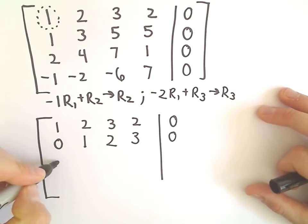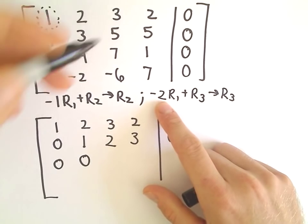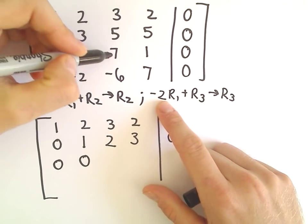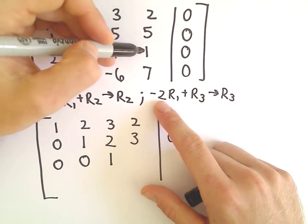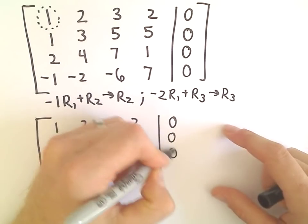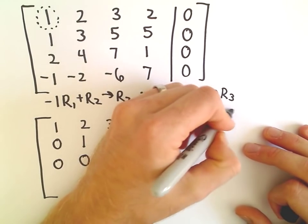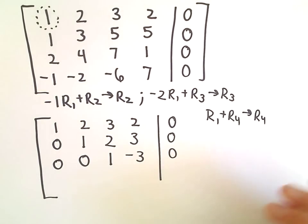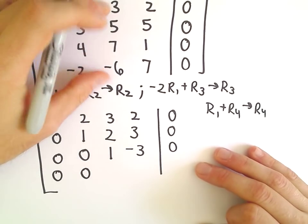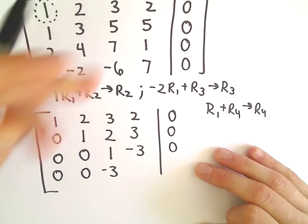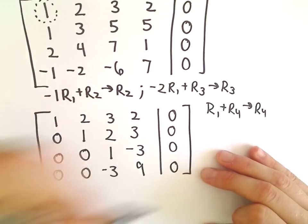add that to row 3 to get our new row 3. So negative 2 plus 2 is 0. Negative 2 times 2 is negative 4 plus 4, that's also 0. Negative 2 times 3 is negative 6 plus 7, that's 1. We'll have negative 2 times 2 is negative 4 plus 1 is negative 3. And again, a 0. And then to get a 0 in the bottom left corner, it looks like we can just simply do row 1 plus row 4 to get our new row 4. So 1 and negative 1 is 0. 2 and negative 2 is 0. 3 and negative 6 is negative 3. 2 and 7 will give us 9. And then again, we have our last entry being 0.